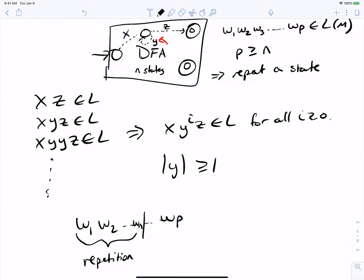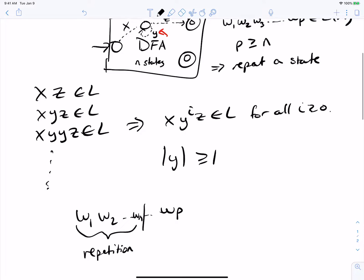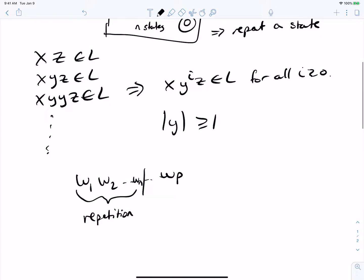Well, what is the repetition part? It's the y string. So that means that x combined with y, where y is the first time a state in the computation repeats, that means that the x and the y part are within the first n characters. So this implies that |xy| is at most n characters.